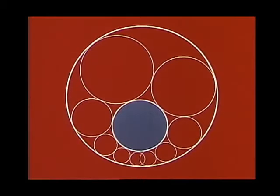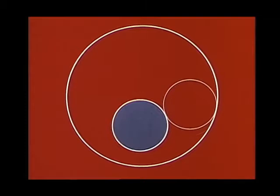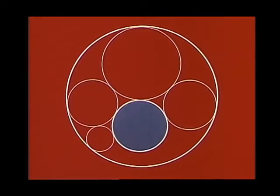Given two circles, one inside the other, we place between them a ring of circles. Beginning anywhere, the first circle touches the two given circles, and each new circle touches the preceding one and the two given circles.